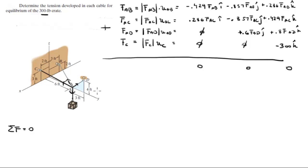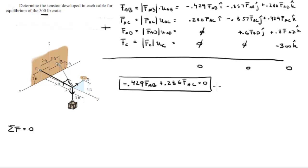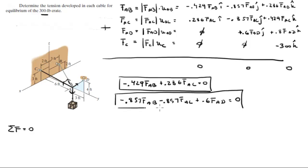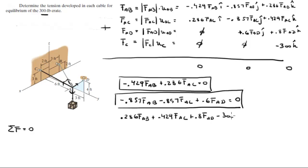Adding all i-components: −0.429 FAB + 0.286 FAC = 0 (Equation 1). Adding all j-components: −0.857 FAB − 0.857 FAC + 0.6 FAD = 0 (Equation 2). Adding all k-components: 0.286 FAB + 0.429 FAC + 0.8 FAD − 300 = 0 (Equation 3).